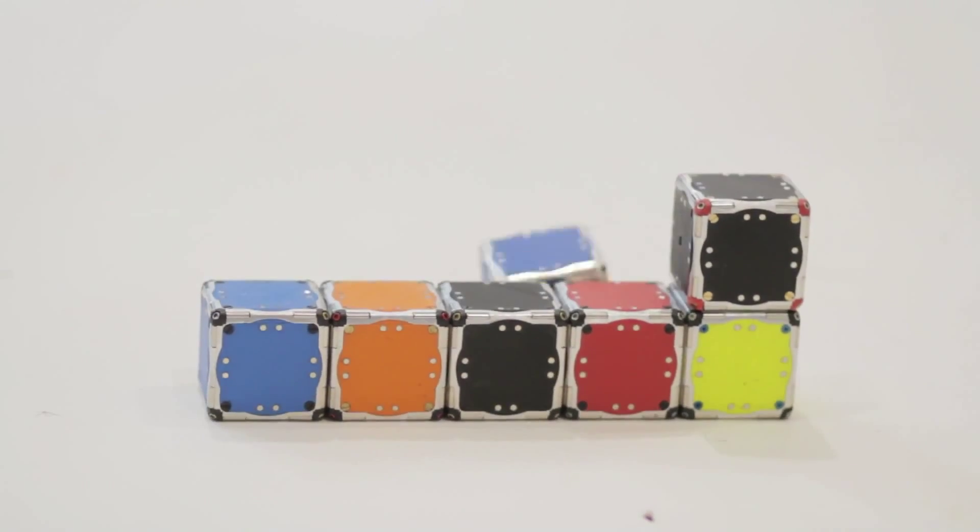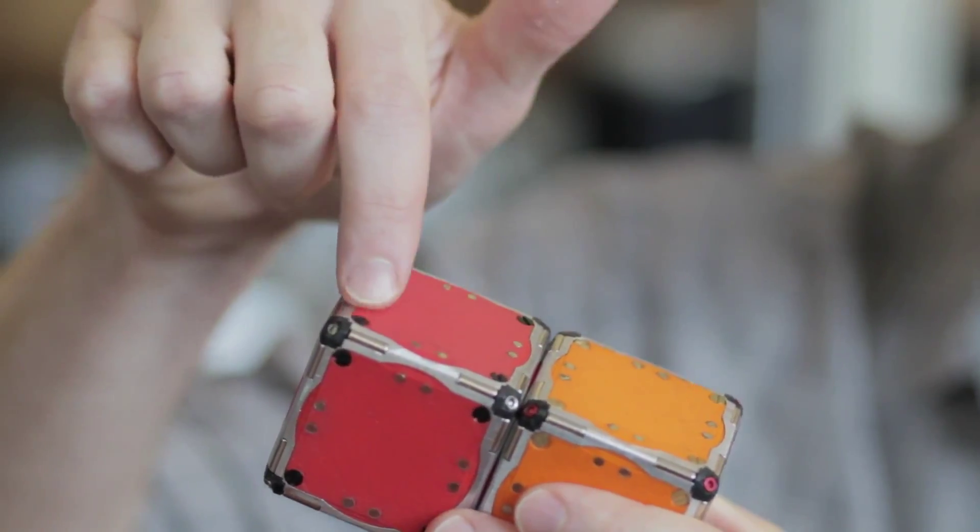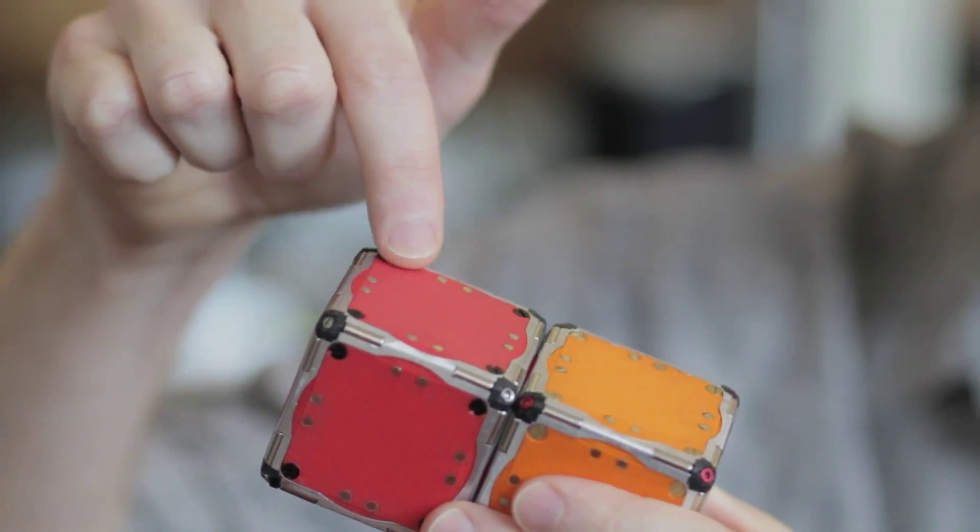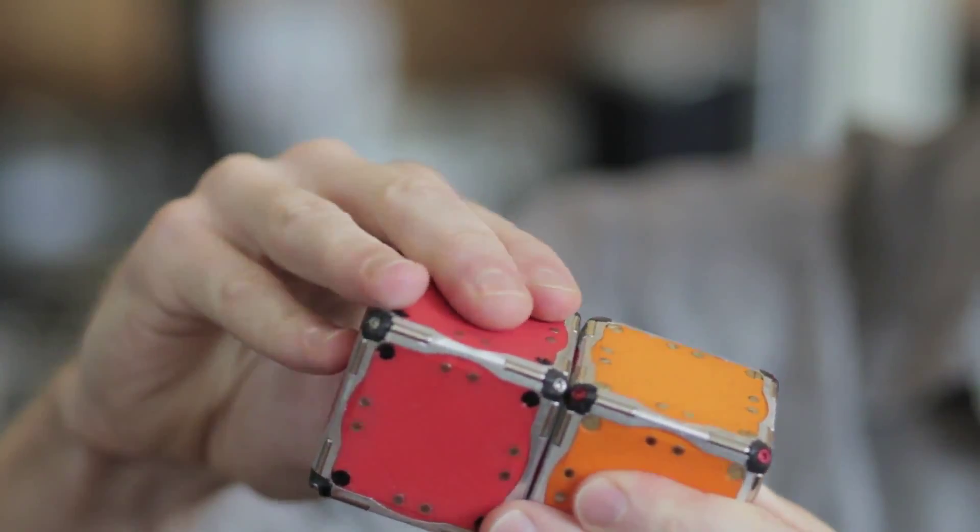The magnet system in the cubes is one of its key features. So we have face magnets. There's eight face magnets that provide some coarse alignment. And then there's these edge magnets, which are free to rotate.